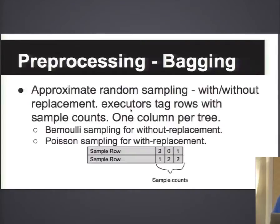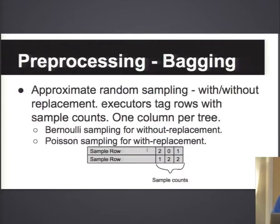For random forest, you have to do bagging. The way we're doing it in Spark is by appending a training row with the sample count for a particular decision tree. If you're training three decision trees, we append three columns for each sample row and insert the number of sample counts. This is pretty easy to do in Spark. For typical bootstrap sampling, we use Poisson sampling, which approximates bootstrap sampling well. For sampling without replacement, we approximate it with simple Bernoulli sampling — one or zero.